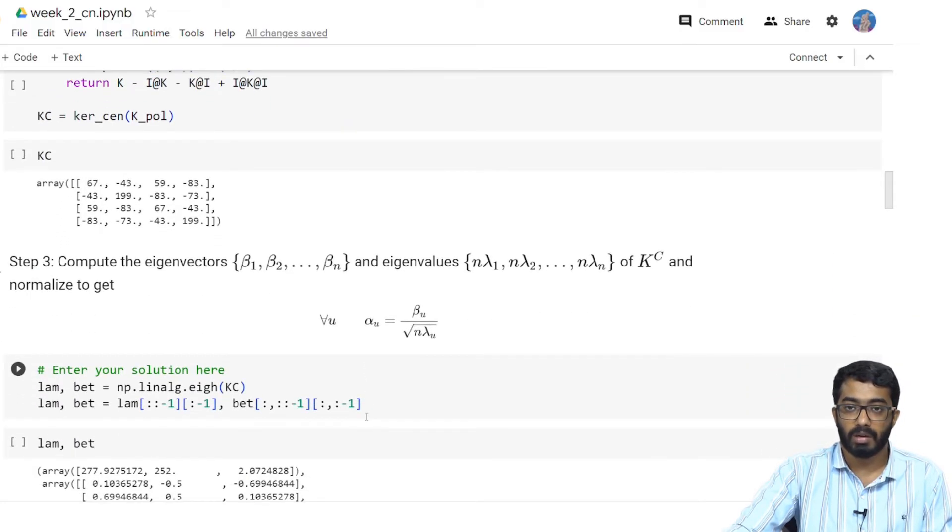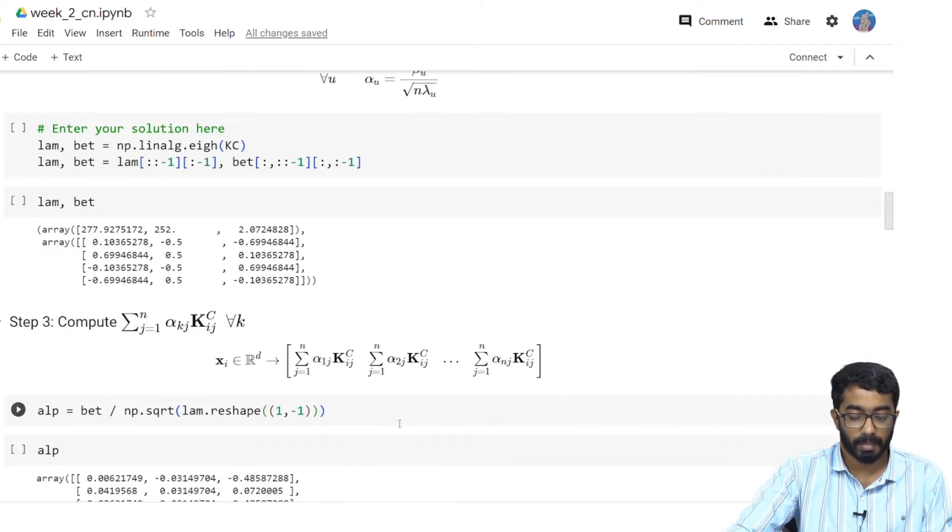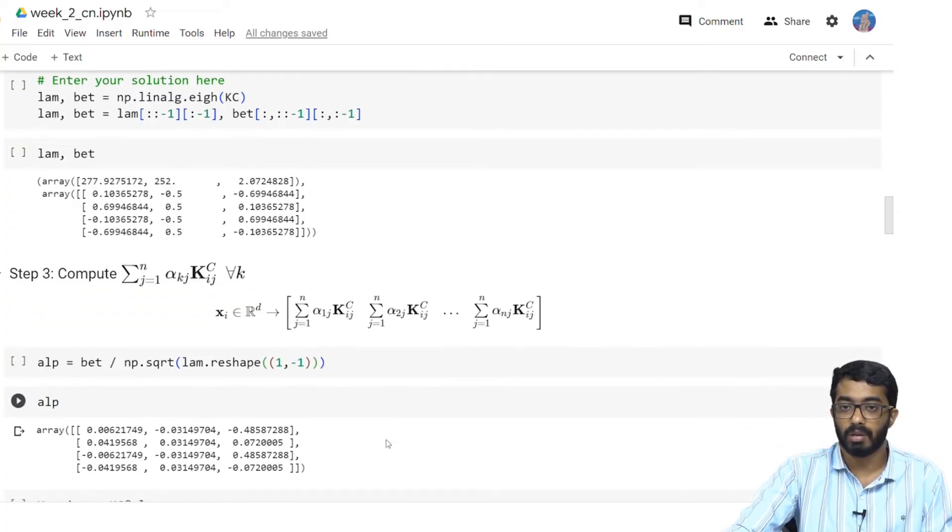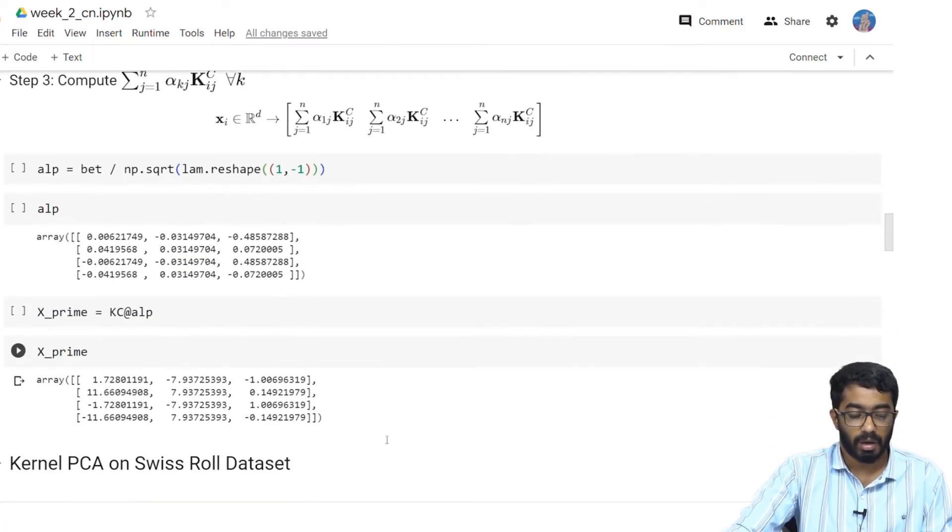Then we calculate eigenvectors and eigenvalues of K_c using the numpy.linalg.eig method and the eigenvalues and eigenvectors are given by this. Finally we compute the representation matrix using alpha and X prime as the representation matrix.